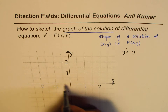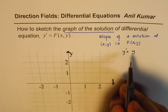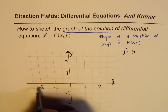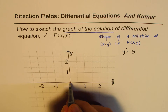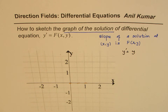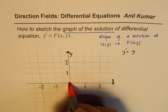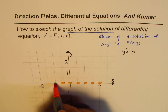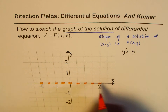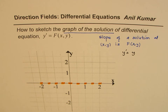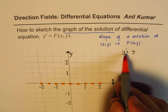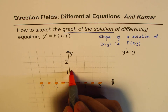All along the x-axis, the y-value is 0, so this says that the derivative of the solution is 0 all along the x-axis where y = 0. We can draw short horizontal lines representing that slope. So at y = 0, horizontal lines represent the slope indicated by this differential equation.